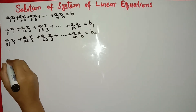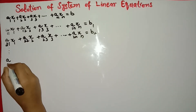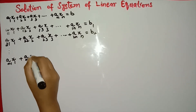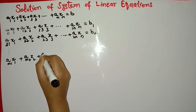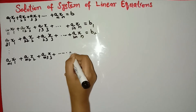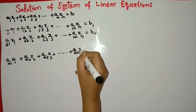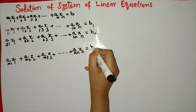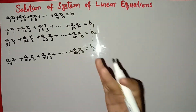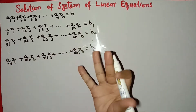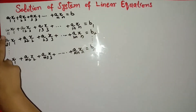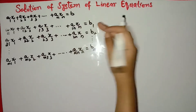We have M number of linear equations, up to M equations: AM1·X1 + AM2·X2 + AM3·X3 + ... + AMN·XN = BM. So this is M number of linear equations and N variables: X1, X2, X3, X4, X5, and XN.